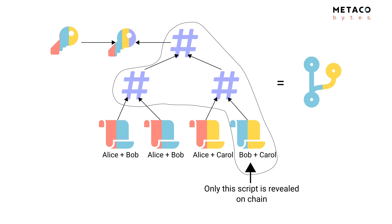Here's an example of a Merkle branch — for those familiar with how the Bitcoin blockchain works, it's exactly the same principle. One important thing to notice is that one of the scripts is not revealed on the blockchain at all. For example, in this case, the 'Alice plus Bob' script is completely hidden on the blockchain and nobody can see it. This has a huge privacy benefit. You can also create contracts composed of say 1000 scripts, and the size of the Merkle branch is still manageable — it's O(n log n) depending on the number of scripts.